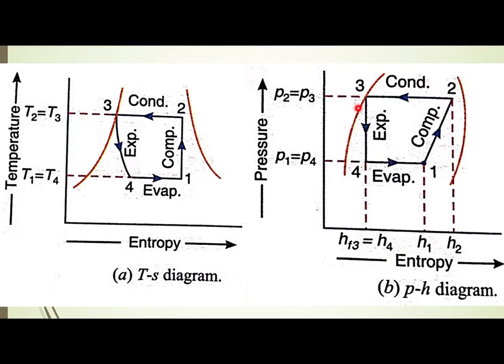All other processes are in the same manner as compared to the previous system. Process 1 to 2 is isentropic compression. Process 2 to 3 is isobaric heat rejection. Process 3 to 4 is isenthalpic expansion. And process 4 to 1 is isobaric heat absorption.